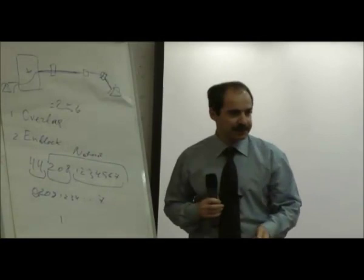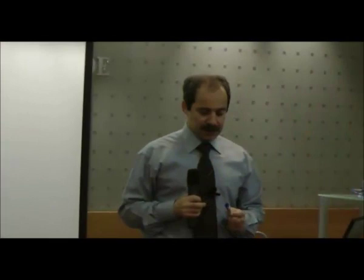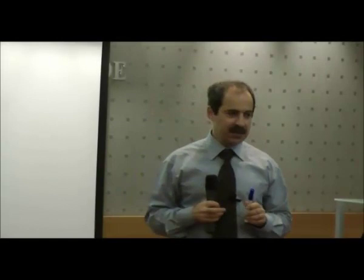When PSTN is calling a PBX, it may send just the last few digits of the number. For example, it can send 4567. The technician who configures Asterisk should take care of this.